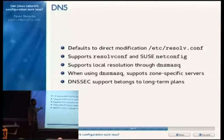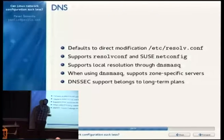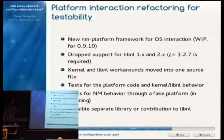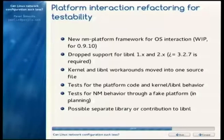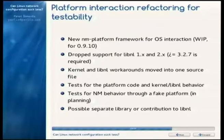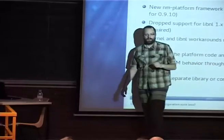The DNS part is mostly about split-DNS scenarios where you want some queries to go through one network to one set of name servers and others to a different set. I was personally working on an NM Platform component, which is a new component in NetworkManager that handles all network configuration through the kernel. Running automated tests, I've already found two kernel bugs and three libnl bugs.